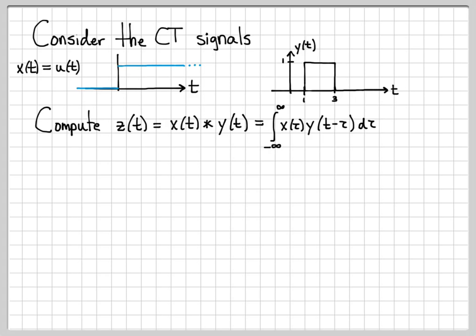Just like in the previous examples, the key to being able to work a convolution integral problem like this is to know what these signals look like. What does x of tau look like? What does y of t minus tau look like? And then what does the product look like? Once I know what the product looks like as a function of tau, I can integrate as a function of tau and get out the number for every value of t. For every value of t, I do this integral and construct z of t.